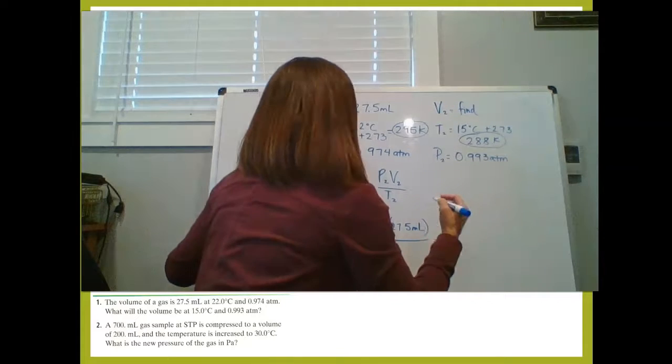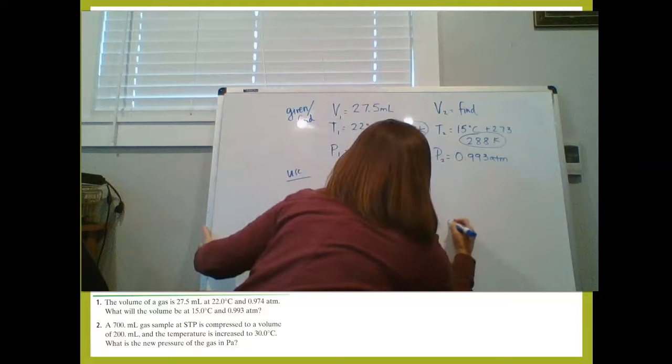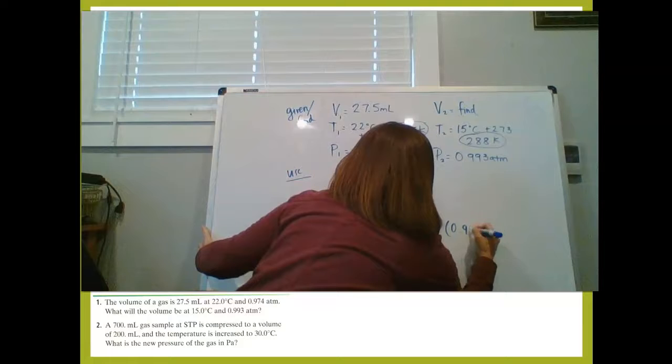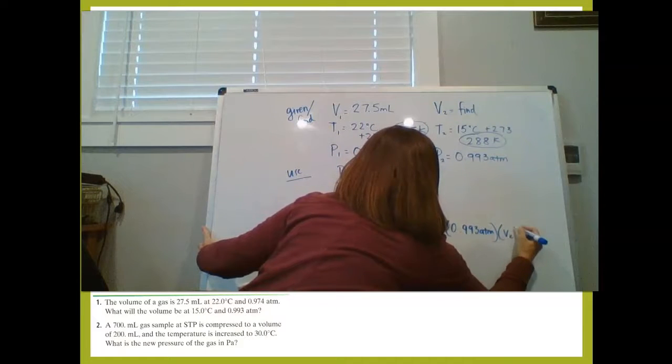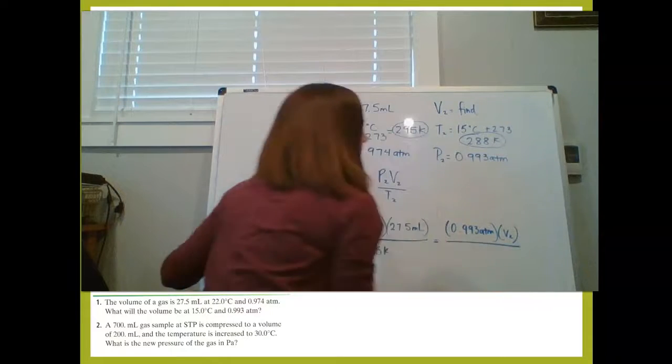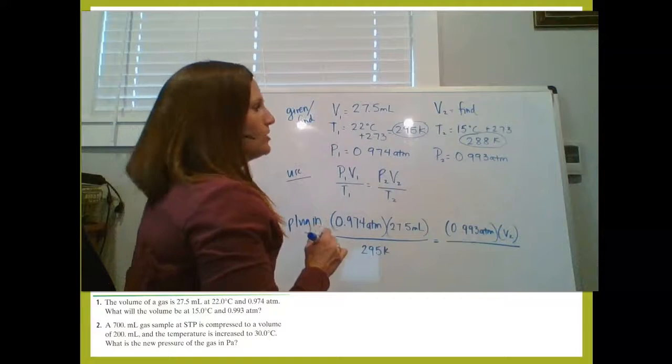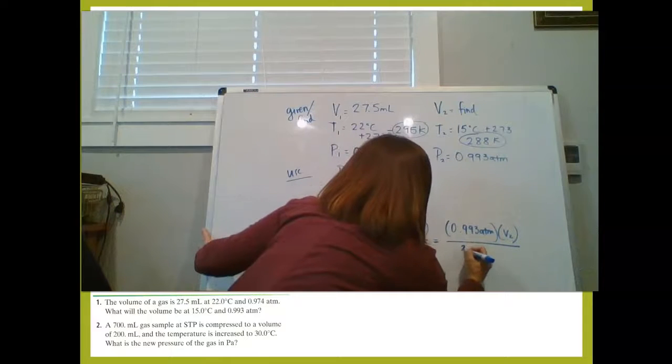Divided by T1, which we solved for 295 Kelvin equals, and we know that we are finding V2. So we have P2, 0.993 ATM. We have V2, and we're dividing that by T2, which is 288 Kelvin.